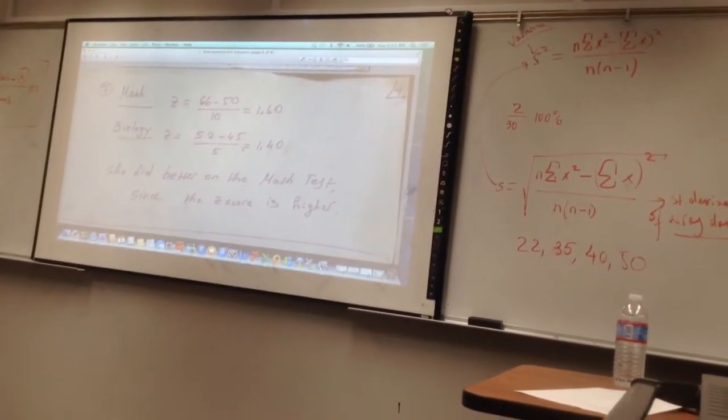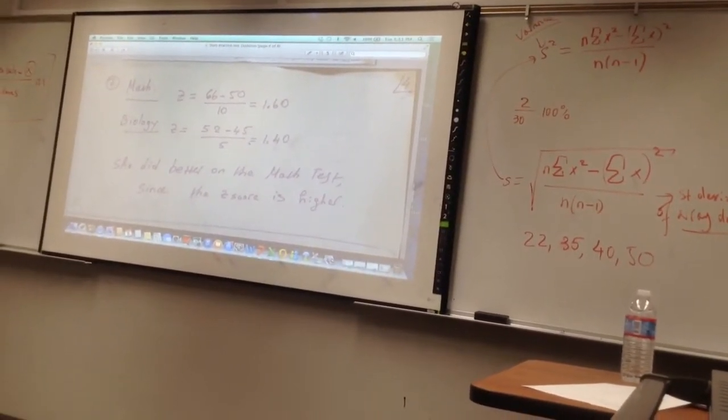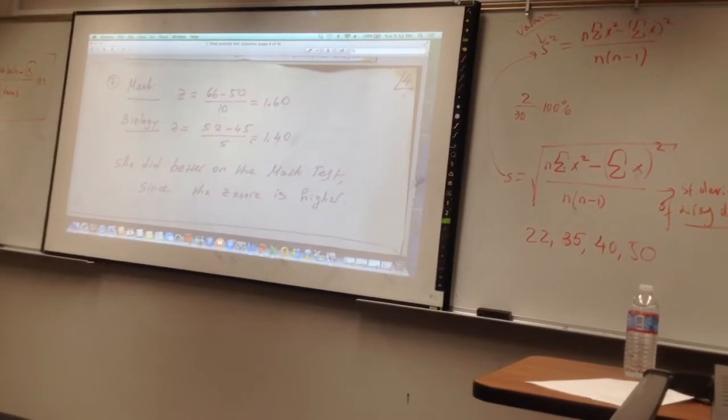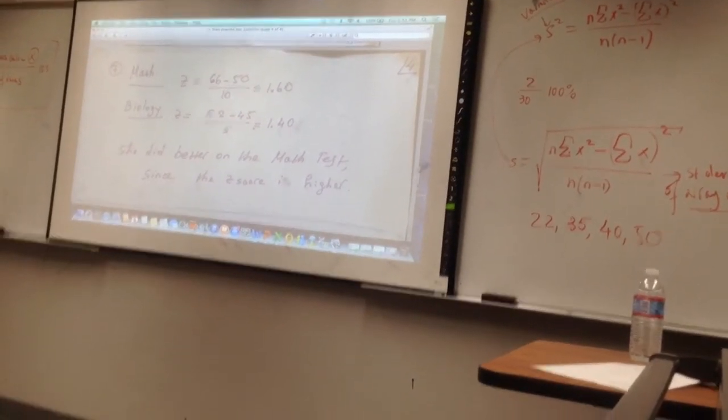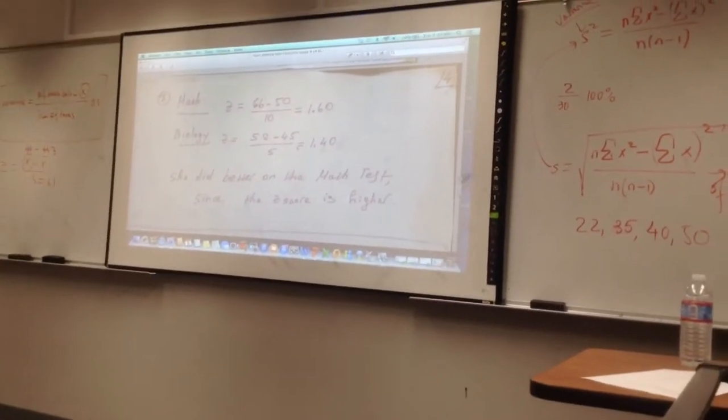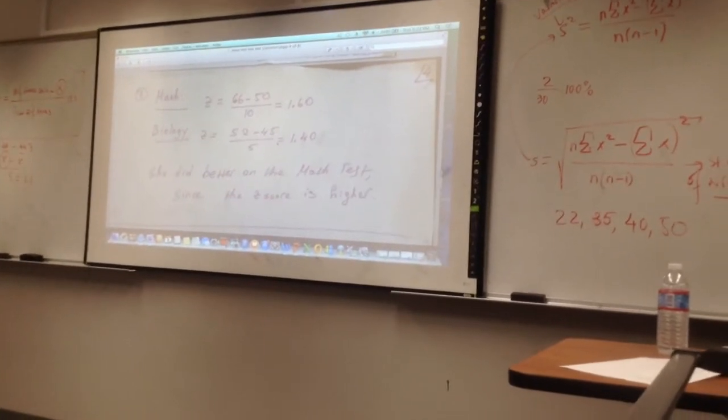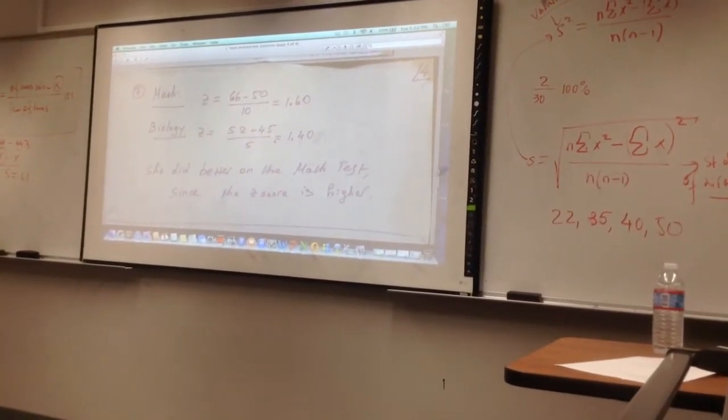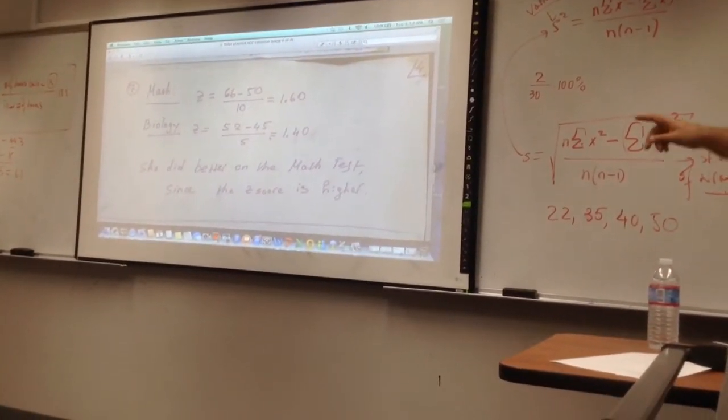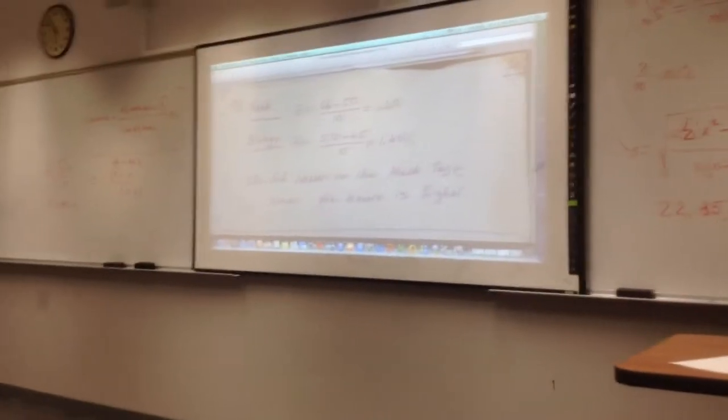You need to calculate the Z scores. A positive bigger Z score means she did relatively better. Find the Z score for the math test using that formula: X minus X̄ divided by S.